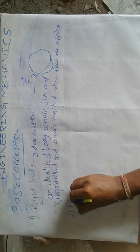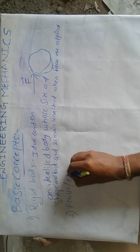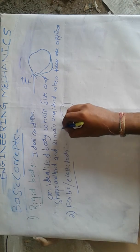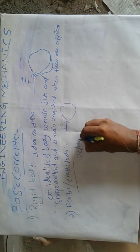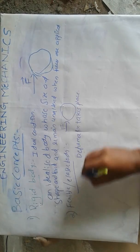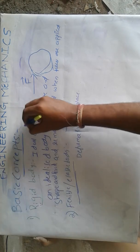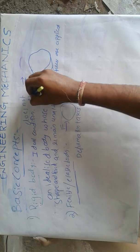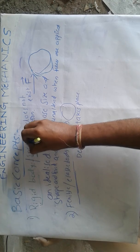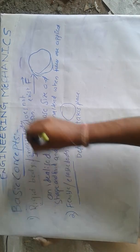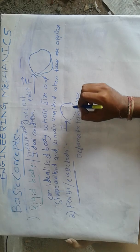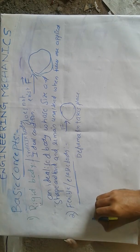Coming to the flexible or elastic body — it is opposite to the rigid body. The application of force on the body produces some deformation in the body, meaning deformation takes place. All the bodies in the universe are said to be elastic bodies, but a rigid body does not exist in the universe. This is also said to be an inelastic body. The effect produced by the force will produce some deformation, and that body is said to be an elastic or flexible body.